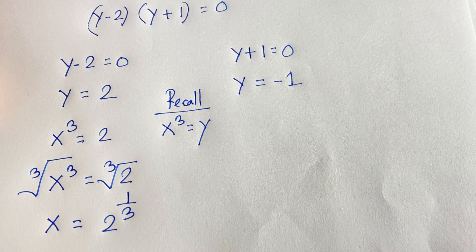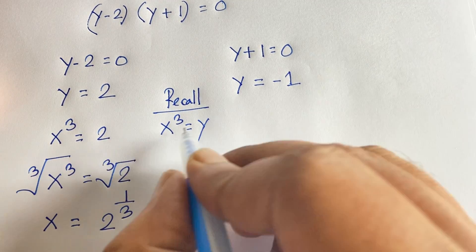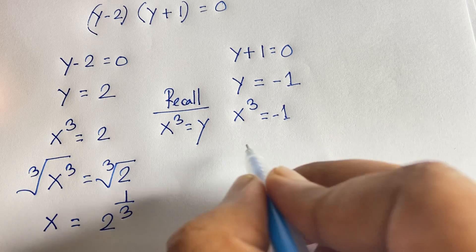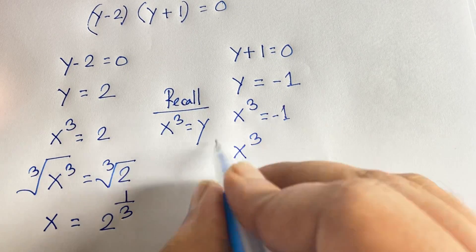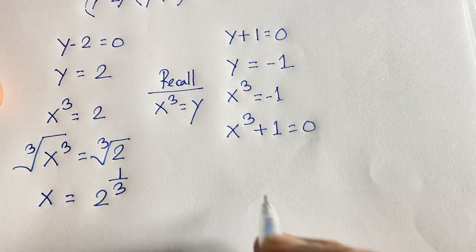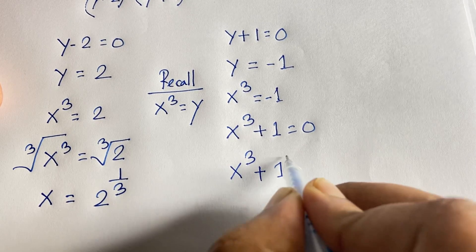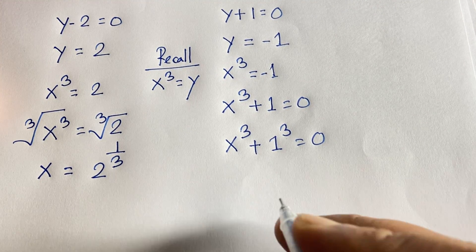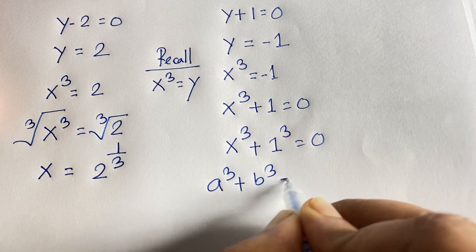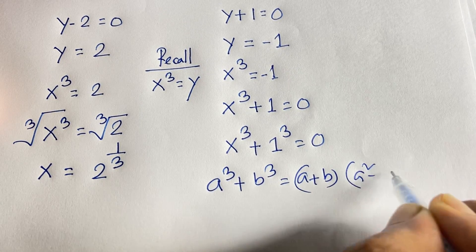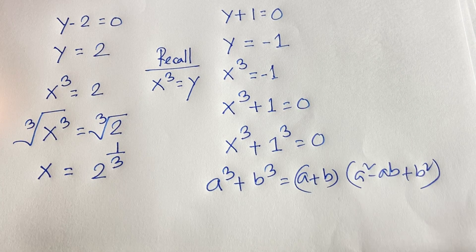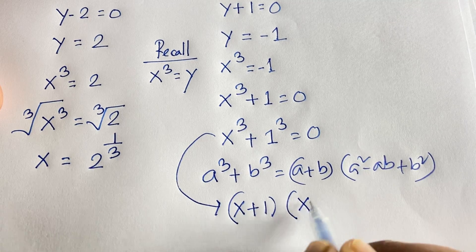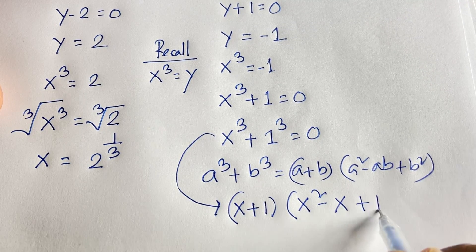For the other case, y is equal to minus 1, which means x to the power 3 is equal to negative 1. Moving negative 1 to the left side gives x to the power 3 plus 1 equals 0, which is x cubed plus 1 cubed. Using the sum of cubes identity — a cubed plus b cubed equals (a plus b)(a squared minus ab plus b squared) — this expression becomes (x plus 1)(x squared minus x times 1 plus 1 squared), where 1 squared is 1.